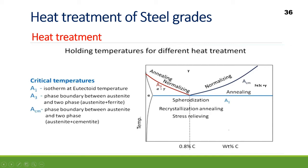Annealing is done above A3, and some types of annealing are done above A1. Normalizing is done above Acm and above A3. Spheroidization annealing, recrystallization annealing, and stress relief annealing are all done below A1. This is a summary of the temperature zones for each heat treatment, which we will discuss one by one in the upcoming slides.